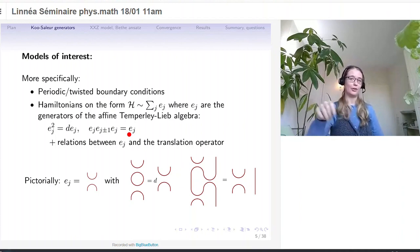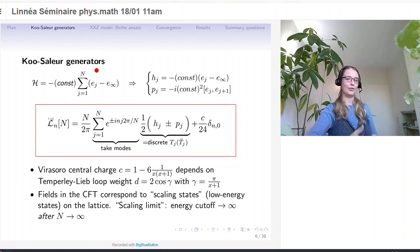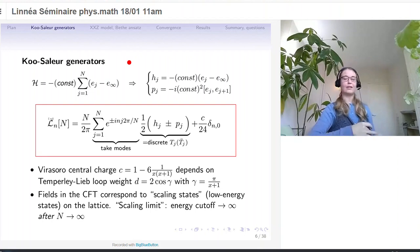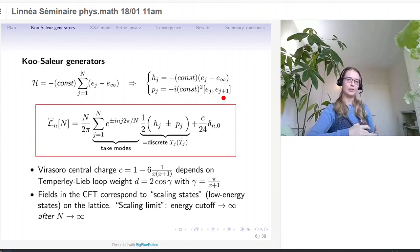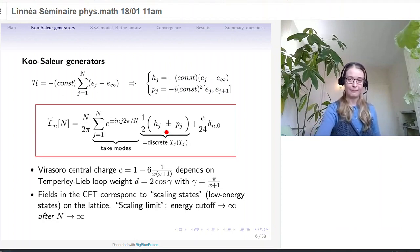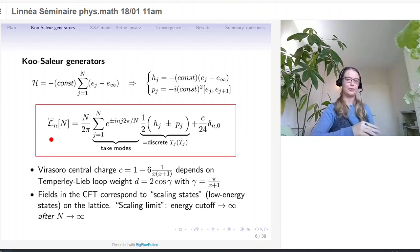With this Hamiltonian, we can specify an energy density, which is just the Temperley-Lieb generator, where we have removed an extensive part just to set the ground state energy to zero in the continuum limit. Based on this energy density, we can also construct a momentum density, which will be this commutator here. Taking these together, we can build components of a discretized version of the stress energy tensor — either T or T-bar, depending on the sign. We all know that the modes of the stress energy tensor would be the Virasoro generators. Similarly, we take modes of this discrete version of the stress energy tensor.